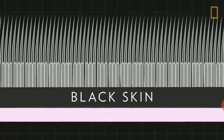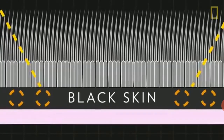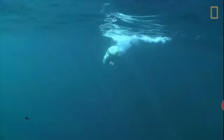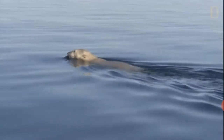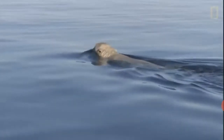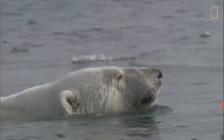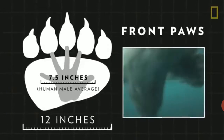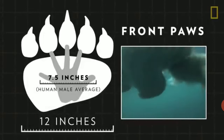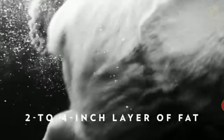Underneath the fur, polar bears have black skin. Sunlight can penetrate the bear's transparent fur and reach the black skin, which absorbs the sun's heat and warms the bear. Polar bears are excellent swimmers — they have evolved a streamlined skull and long neck, which helps streamline their bodies in water. The front paws are large, up to 12 inches wide, flat, and act as paddles as the bears swim. Additionally, bears have a thick fat layer that helps keep them buoyant and warm as they swim.